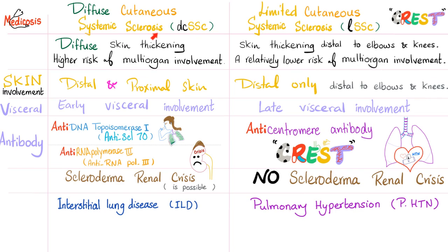Now let's compare diffuse cutaneous systemic sclerosis and limited cutaneous systemic sclerosis, a.k.a. CREST syndrome. Diffuse cutaneous has diffuse cutaneous thickening — every part of the skin. Limited has skin thickening too, but limited and peculiar to areas distal to the elbows in the upper extremities and distal to the knees in the lower extremities. Diffuse cutaneous has a higher risk of multi-organ involvement — esophagus, lungs, kidneys, etc. — and it happens earlier in the disease course. Limited has a relatively lower risk of multi-organ involvement, and if it happens, it occurs later.